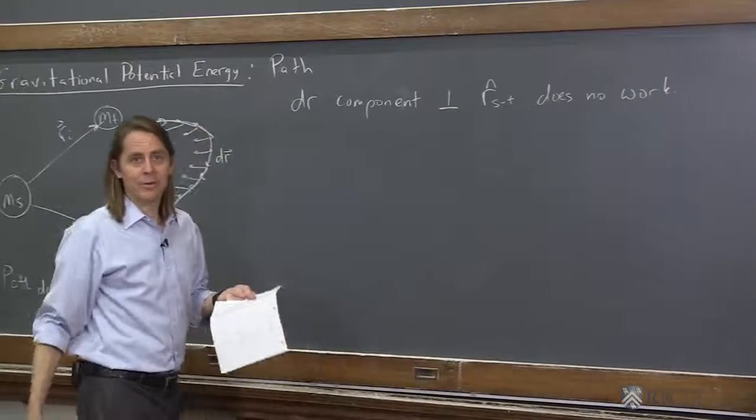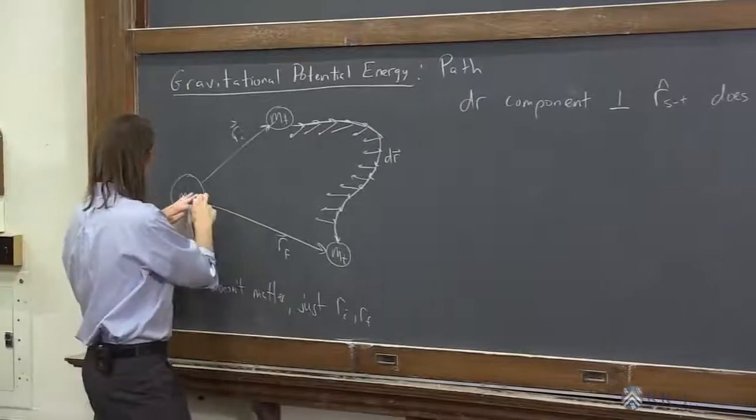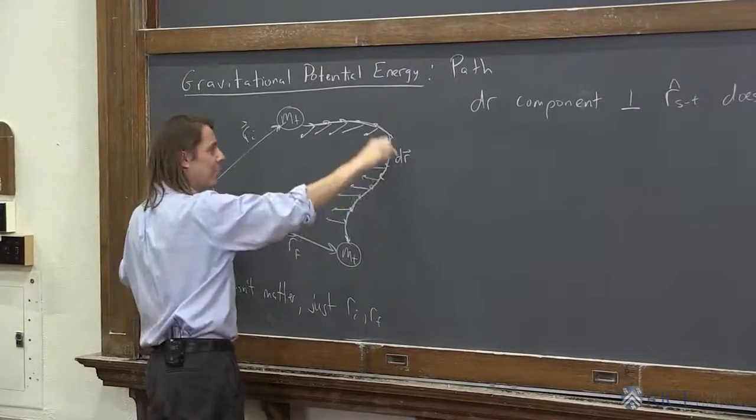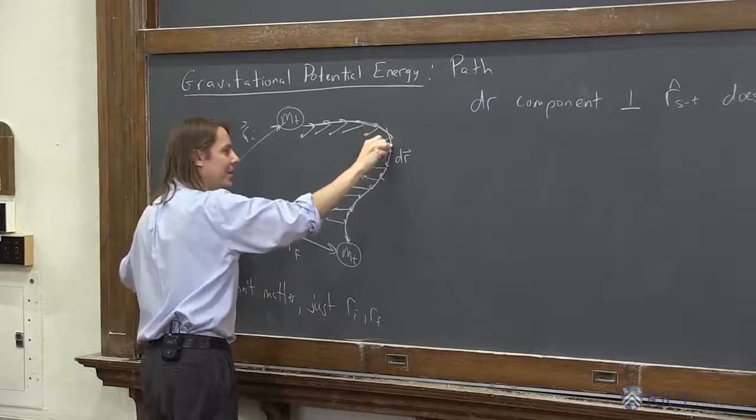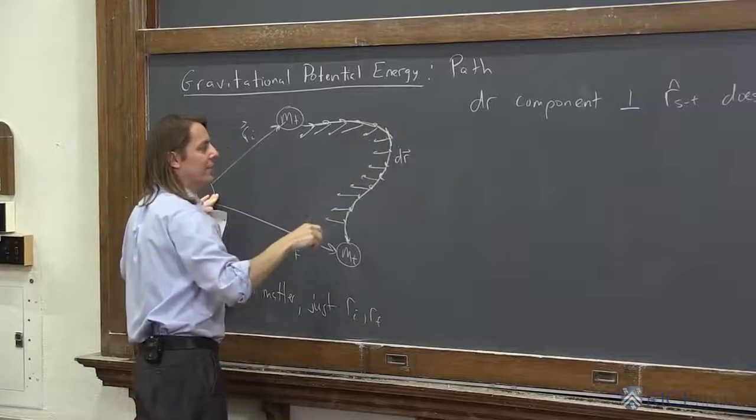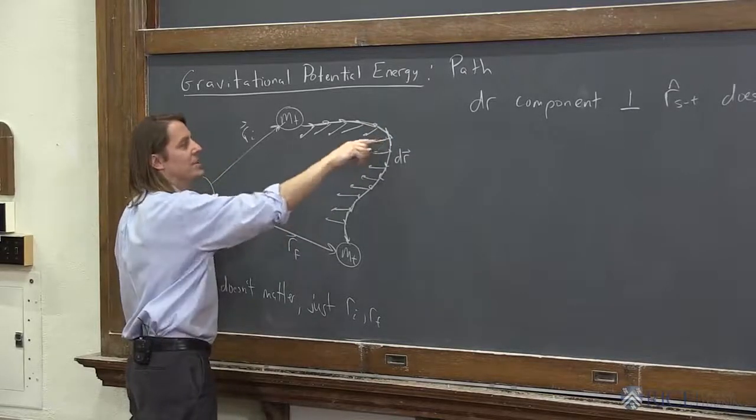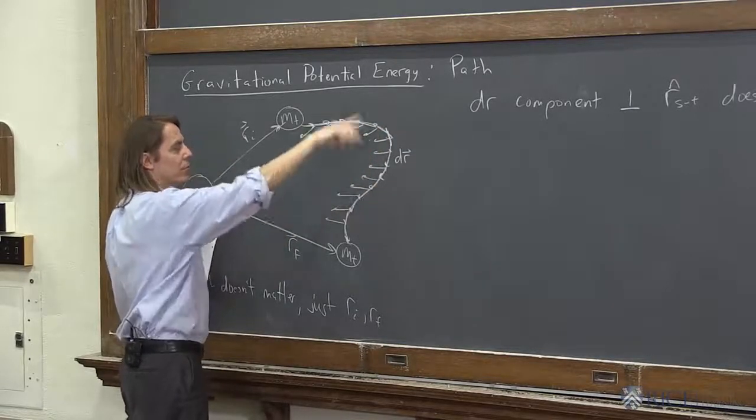Because it's a dot product. So if you had it a case where it's moving exactly perpendicular to f, like right here, that little move did nothing. Because it wasn't really changing its radius. It was moving along a circle going around the force.